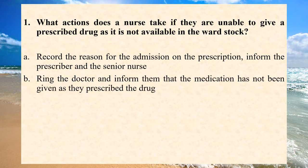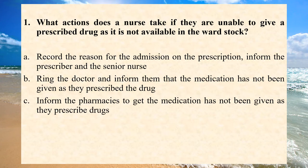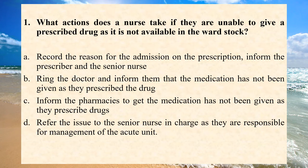B. Ring the doctor and inform them that the medication has not been given as they prescribed the drugs. C. Inform the pharmacist that the medication has not been given as they prescribed drugs. D. Refer the issue to the senior nurse in charge as they are responsible for the management of the acute unit.